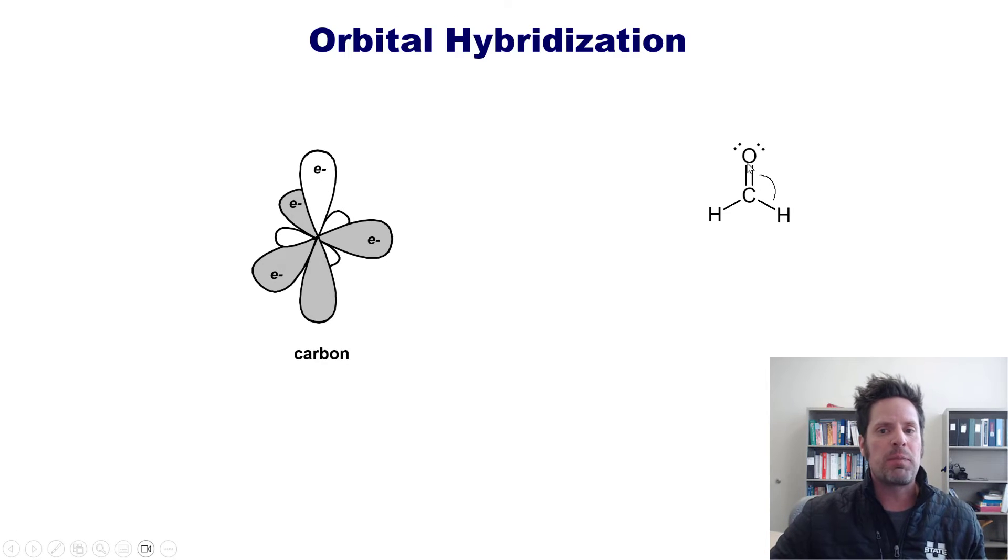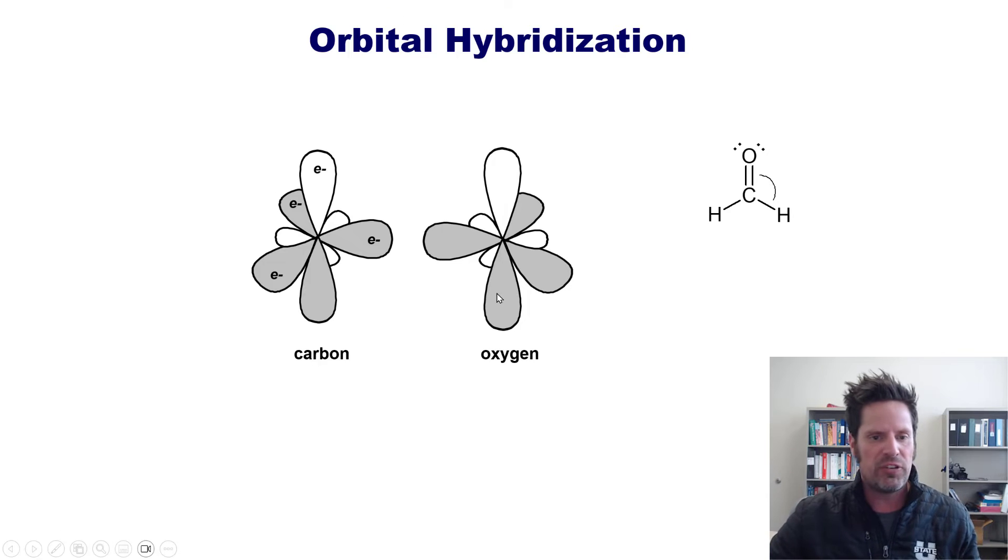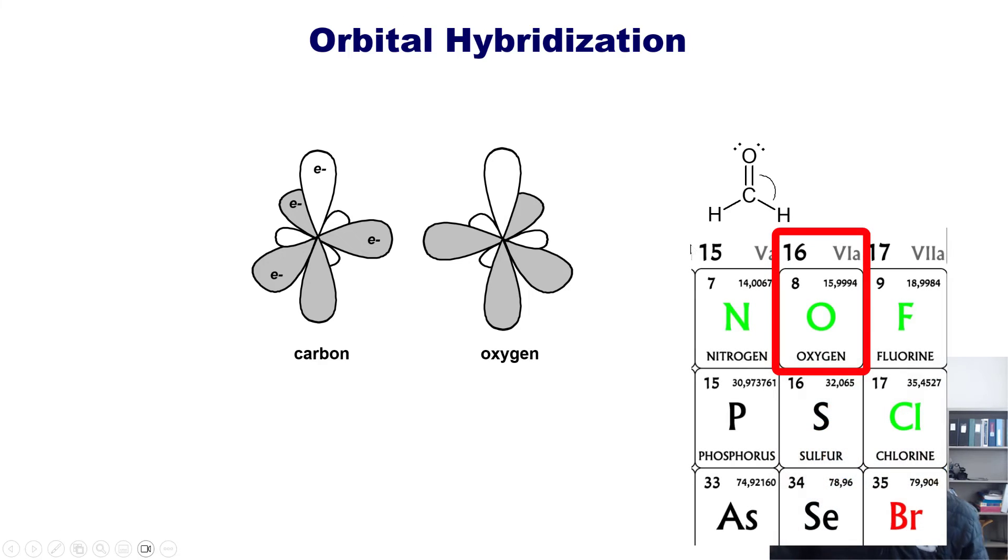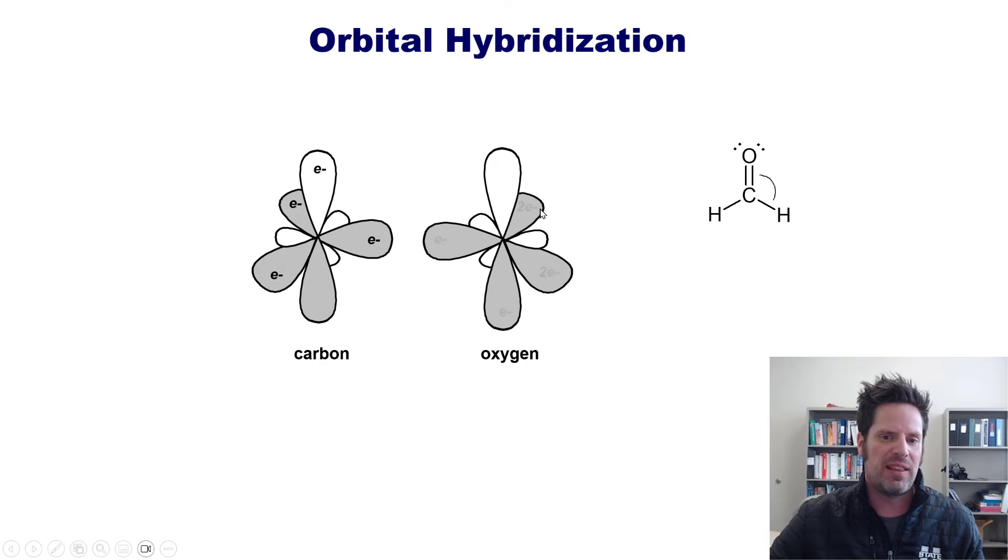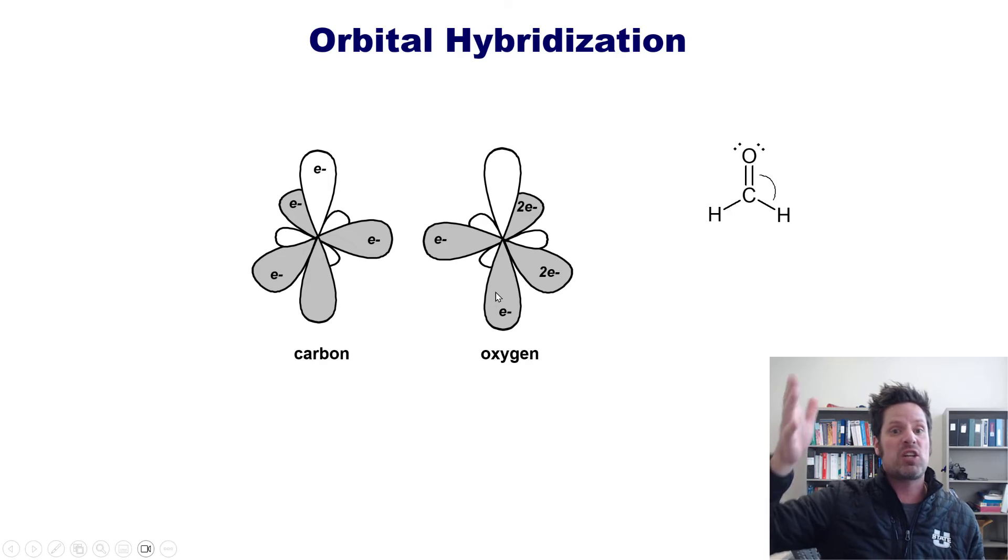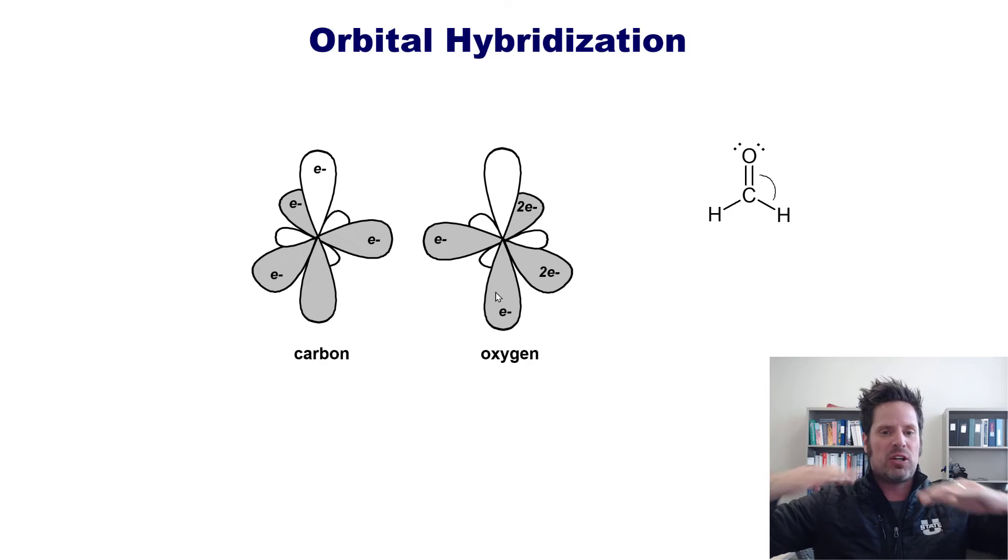As you might note, this oxygen, because it's surrounded also by three things—a lone pair, another lone pair, and a carbon—is also sp2 hybridized. So it will do the same thing with its p and s orbitals as the carbon did. Oxygen has six valence electrons because it's in column 6A of the periodic table. So it'll lay them down kind of like this: two electrons in one of its sp2 orbitals, two in another, and this represents each of these two lone pairs. One valence electron in this third sp2 orbital, and then another valence electron in its unhybridized p orbital that's going straight up and down perpendicular to the plane.